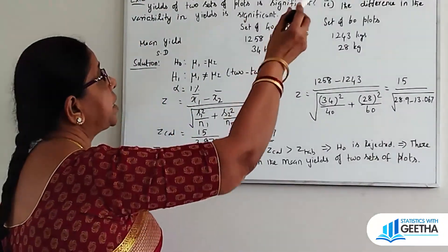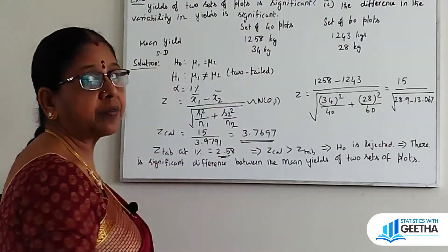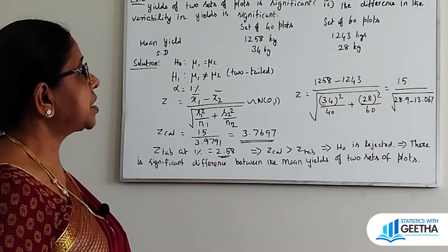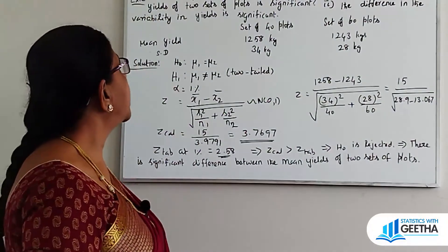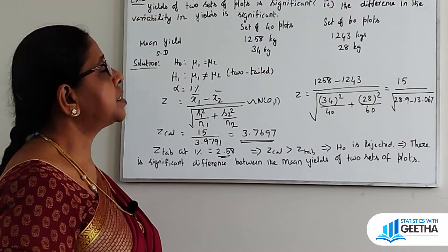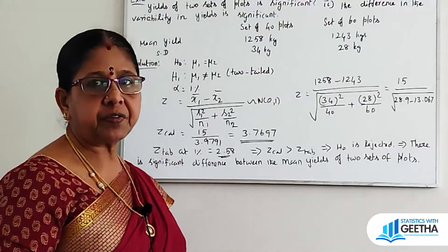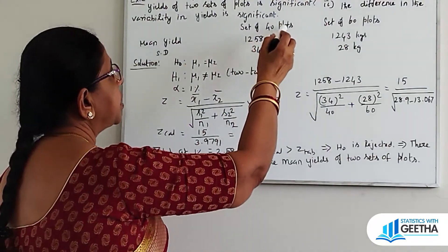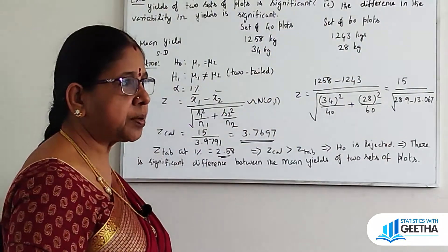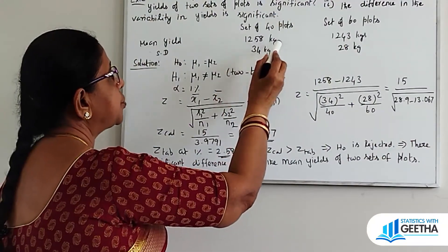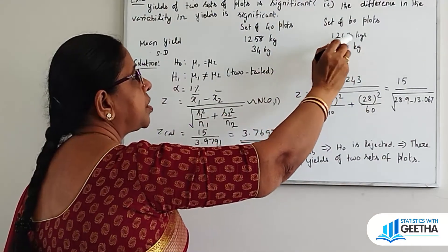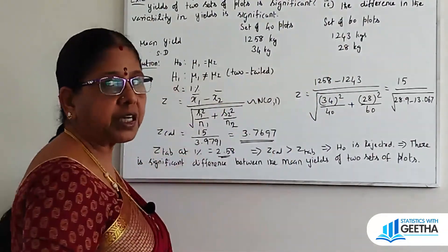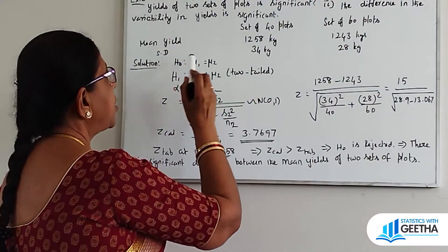Example 2: The mean yield of two sets of plots and their variabilities are given below. Examine whether (1) the difference in mean yields is significant, and (2) the difference in variability in yields is significant. Given data: Set 1 = 40 plots, mean yield = 1258 kg, standard deviation = 34 kg. Set 2 = 60 plots, mean yield = 1243 kg, standard deviation = 28 kg.